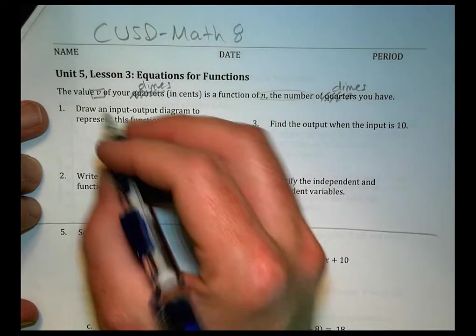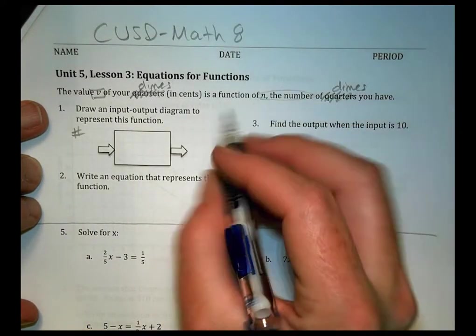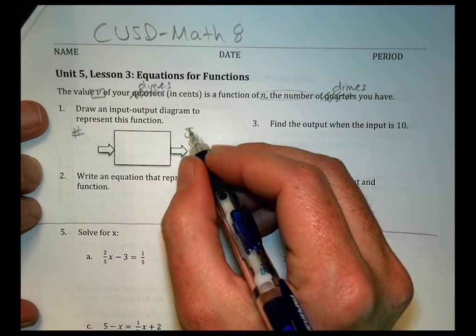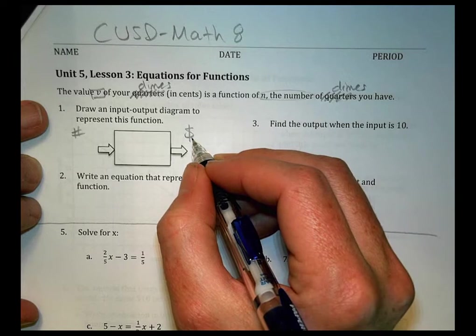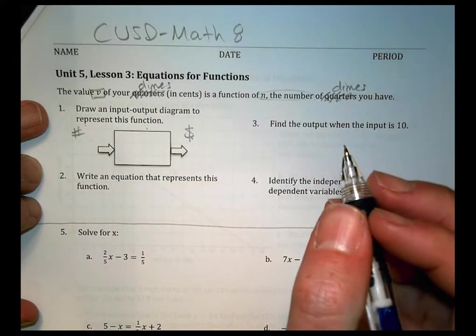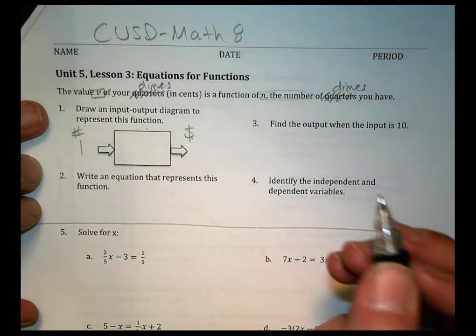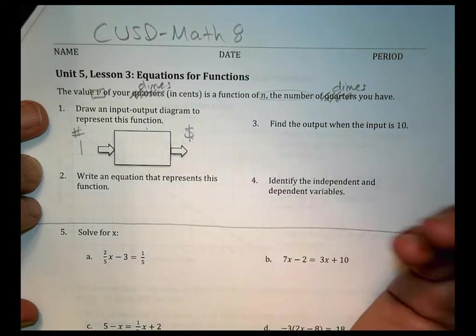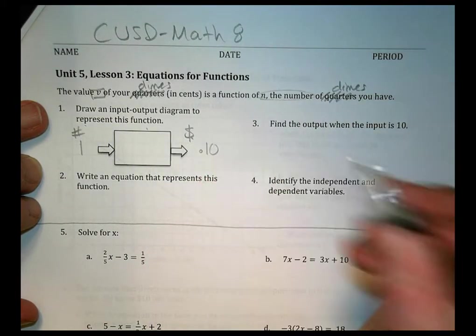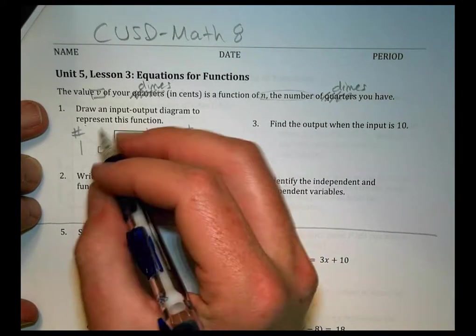What we're saying here is that the value of the money I have is a function of how many dimes I have. So if I have one dime, I know that one dime has a value of 10 cents. I'm going to end up over here with 10 cents. So how do I get that 10 cent value from what I put in here?